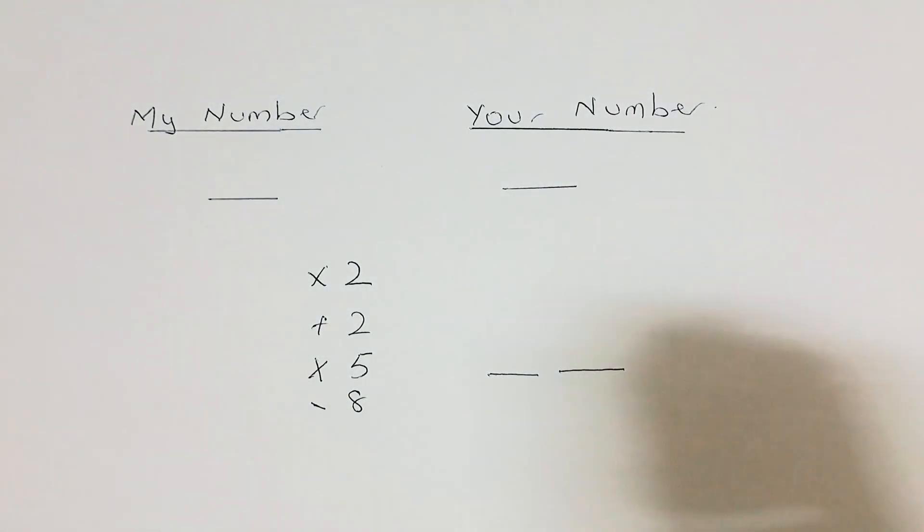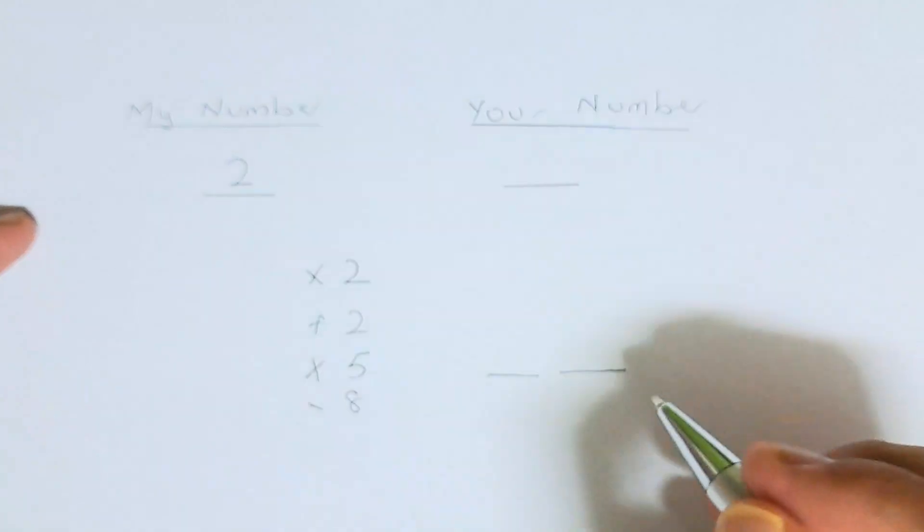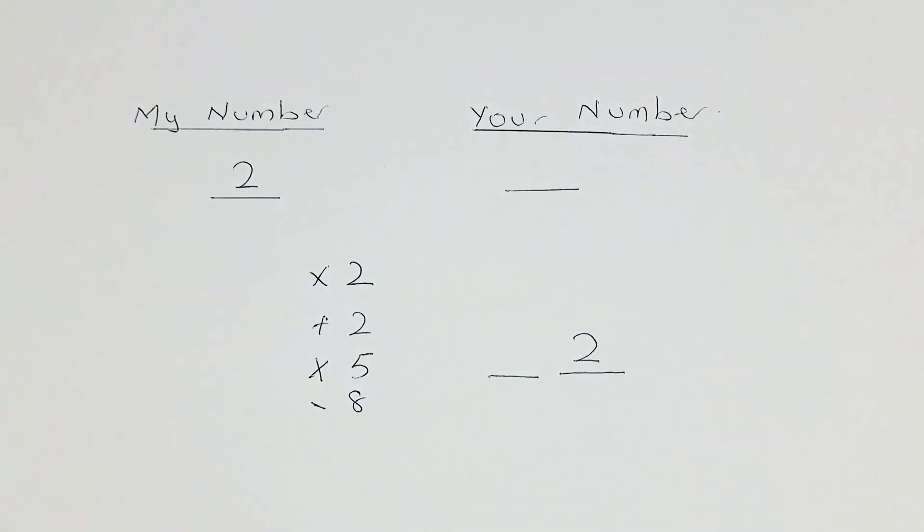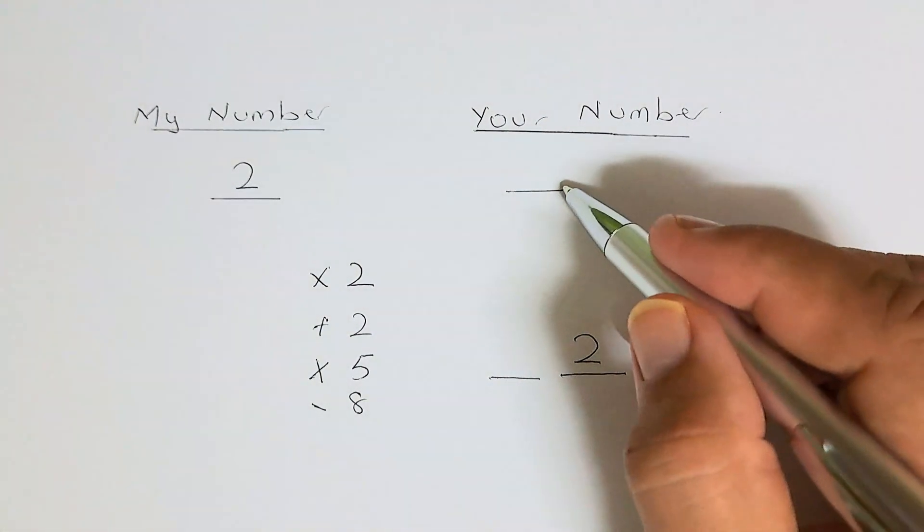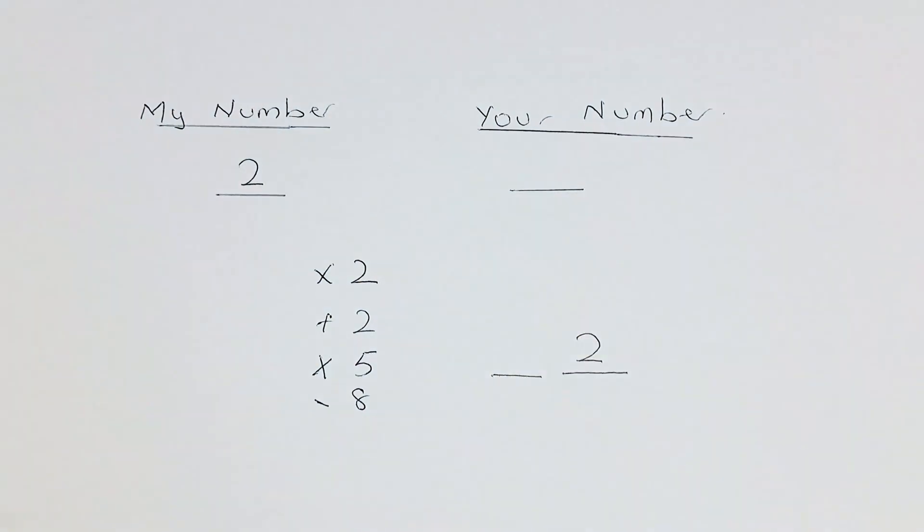My number I have chosen was 2, so that will appear at the end. And your number that you have chosen will appear in the first number there. Let's do this. Is that right? That will be great. So now we shall do the second example.